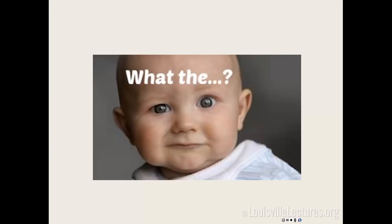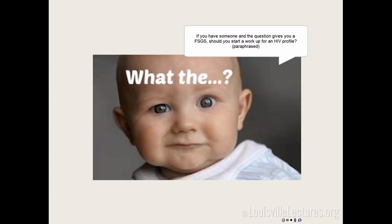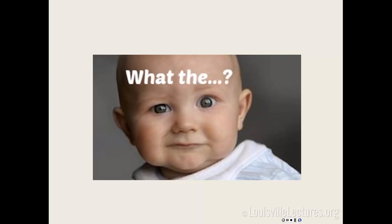Q&A: If a question gives you FSGS, you should absolutely work up secondary causes like HIV, heroin use, and obesity — they won't ask about primary FSGS. Regarding when to biopsy: if renal function is abnormal or there is worsening proteinuria, biopsy is indicated. Even with normal kidney function, significant proteinuria warrants biopsy. It could be class 1 or 2 lupus where you don't treat, but you need to know.